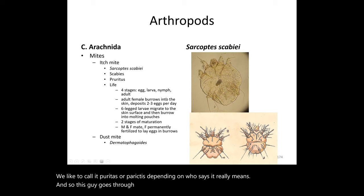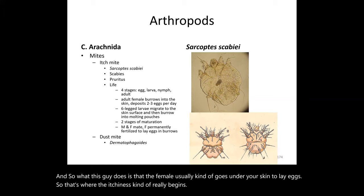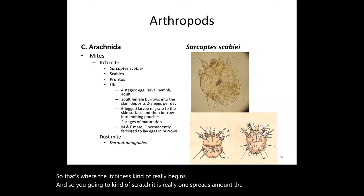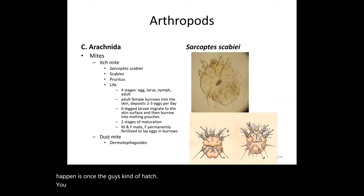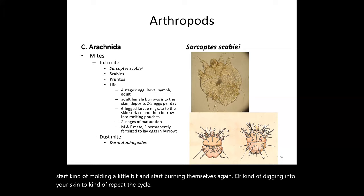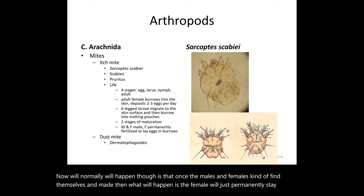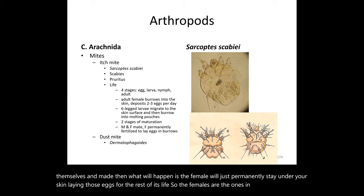Sarcoptes scabiei goes through several life stages: egg, larva, nymph, and adult. The female burrows under your skin to lay eggs, which is what triggers the itchiness. Scratching spreads them further. Once the larvae hatch, they migrate to the skin surface, molt, then burrow again to repeat the cycle. After mating, the female permanently remains under the skin laying eggs for the rest of her life.